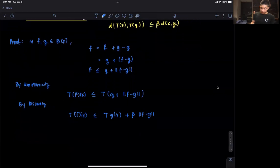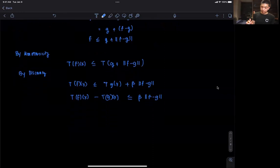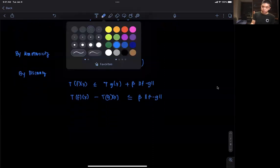From here, we can do some rearranging. We know that T(f)(x) - T(g)(x) is less than or equal to beta times the norm of f minus g. So we have that side. Now let's go to another side.